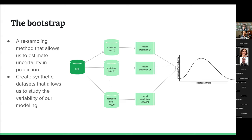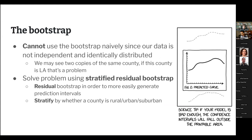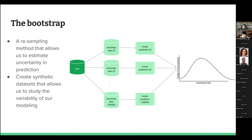Unfortunately, we can't use the bootstrap naively because our data is not independent and identically distributed. A good way of thinking about why this is a problem: imagine we had 10,000 datasets and LA County appeared multiple times in one of them. That would obviously be a very different version of the United States than reality. That's not just a small sampling error — this version of the United States would be deeply different from the one that actually exists.